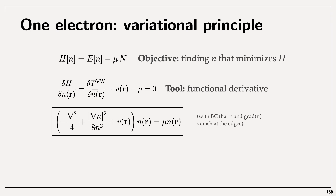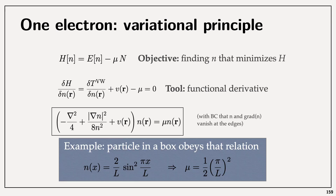We could actually solve that problem directly to get a density. As mentioned before in previous screencasts, the operator in front of n also depends on n, which means we are going to have to do a self-consistent loop. We need to know the answer in order to calculate the answer, so we start from a guess and keep iterating until the guess and the solution are the same. We can apply this to a very elementary problem like a particle in a box, where we find the density and also the chemical potential, which corresponds to the energy of the state.